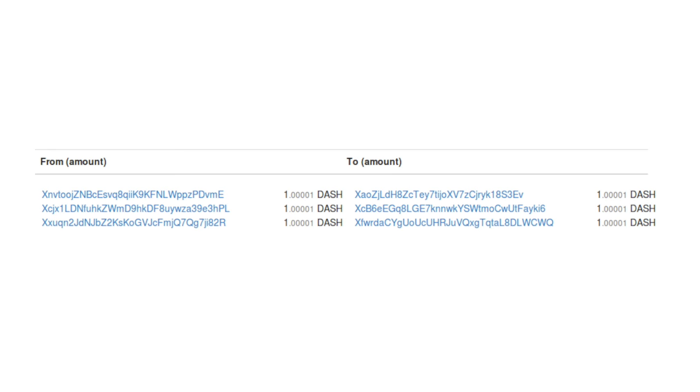Compare how that non-private transaction looks with this private send transaction. Whereas we may know that this address belonged to Moe, again because he published it publicly on Twitter, or put it in an invoice or something, we now have no idea which of these many output addresses now belong to him. Is it this one, this one, this one? We don't know, and that's the point.